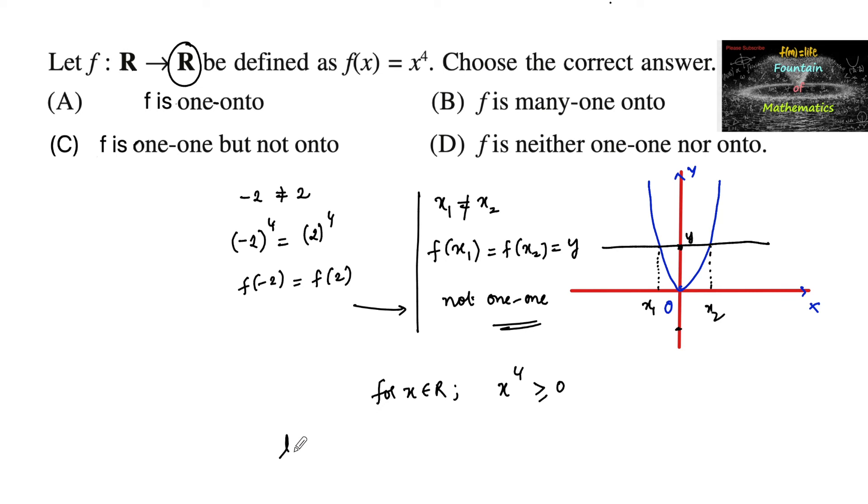For let us consider y equals minus 2, there is no x belongs to R such that f(x) equals minus 2, that is x to the power 4 equals minus 2. We will not get that in real numbers. For all the negative real numbers in the codomain, there is no pre-image. Hence this is not onto.